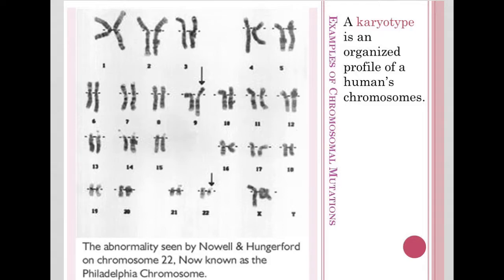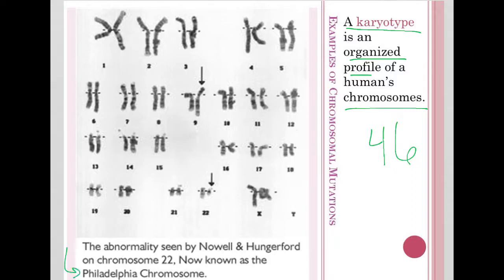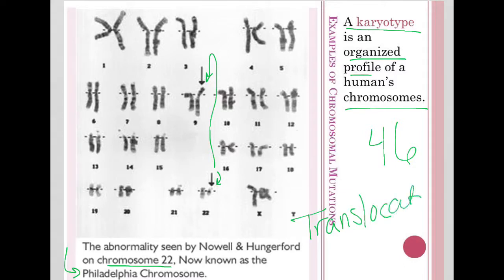Here's a karyotype — we'll talk more about karyotypes when we get to cell division and genetics. A karyotype is basically an organized picture or profile of a human's chromosomes. We have 46 total chromosomes that come in 23 pairs. This is known as the Philadelphia chromosome, a genetic disorder where you can see an abnormality where a portion of chromosome 22 has been attached or translocated onto chromosome 9.